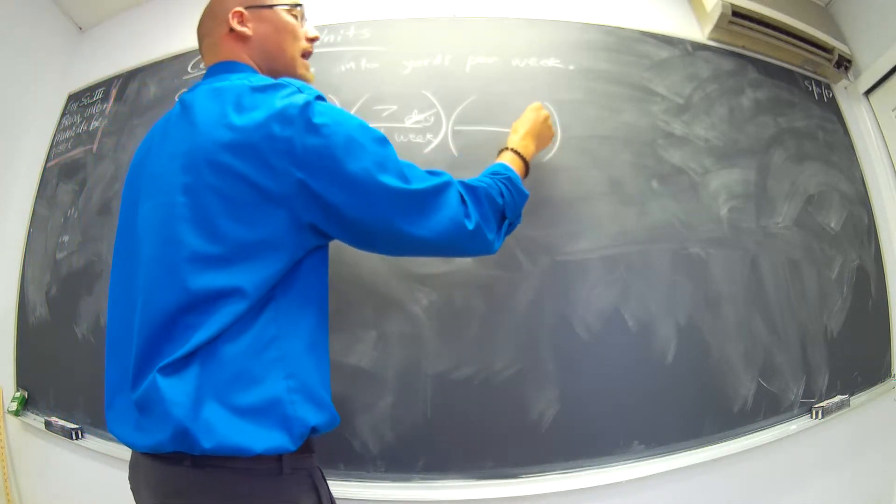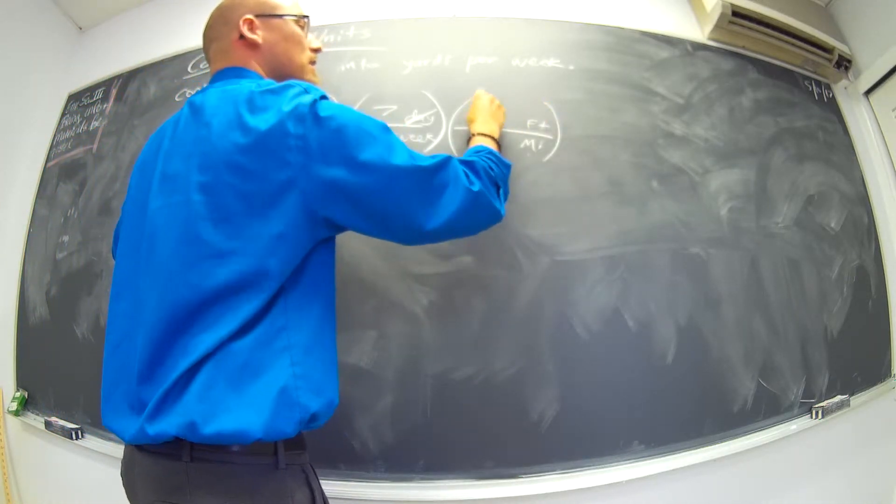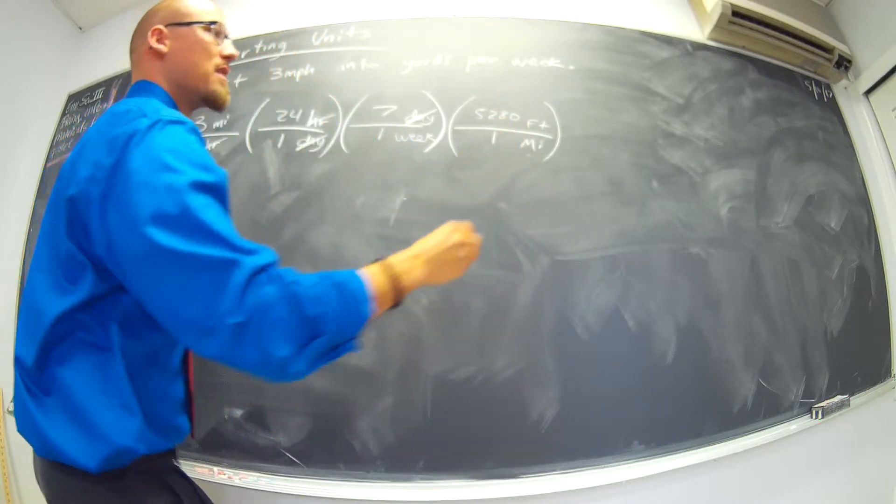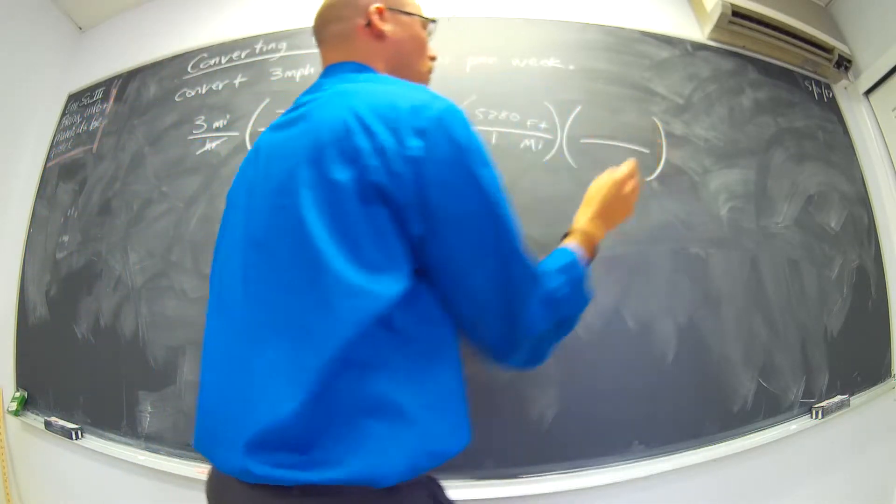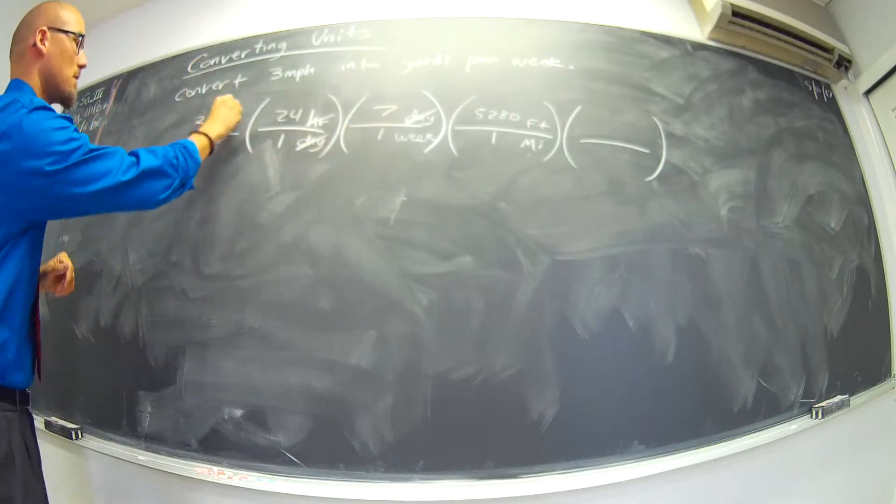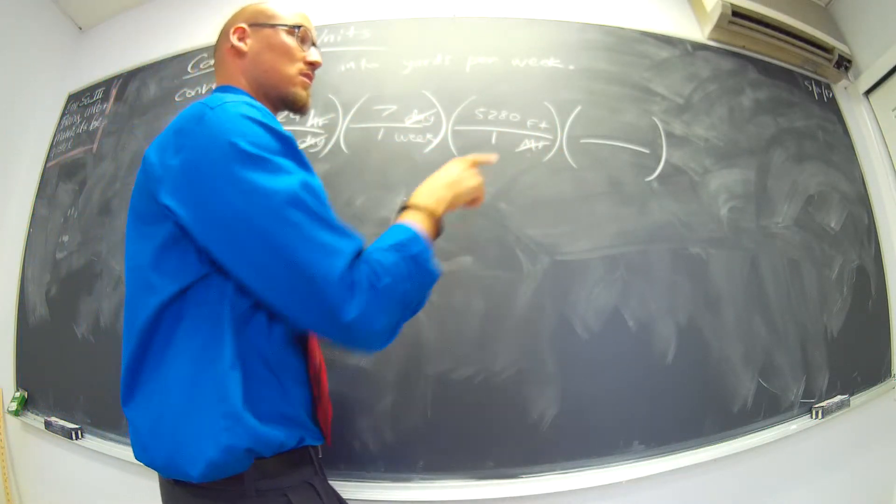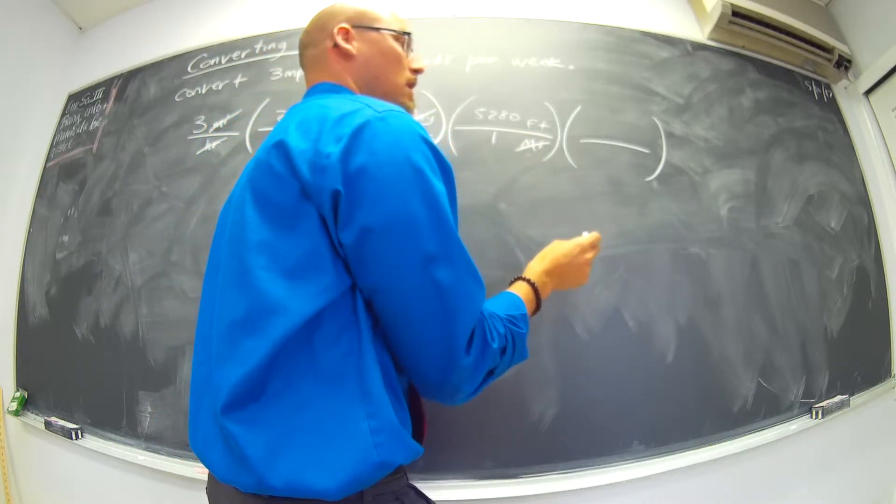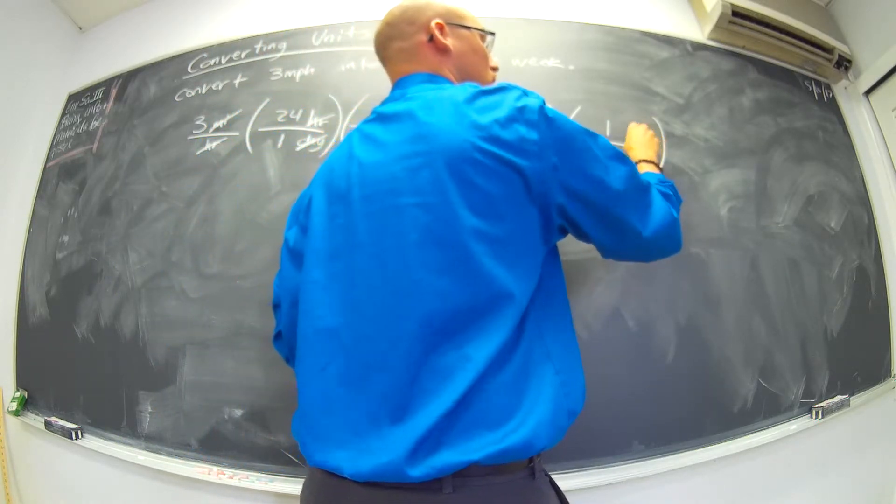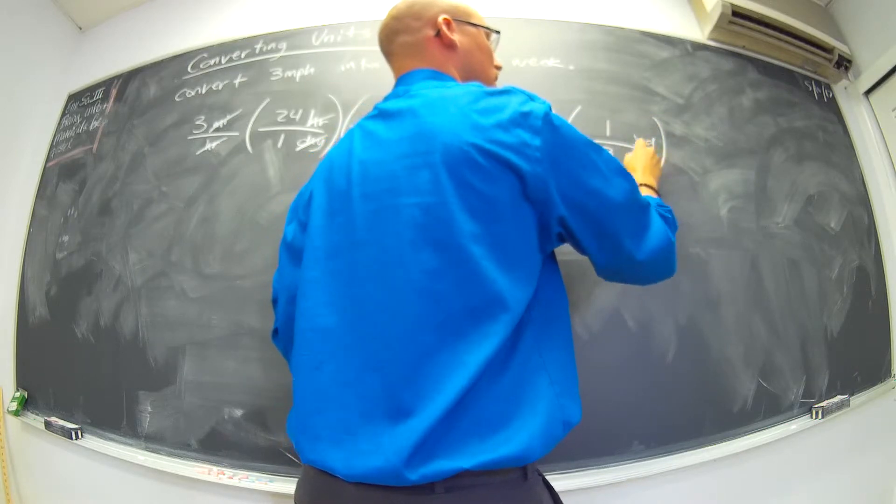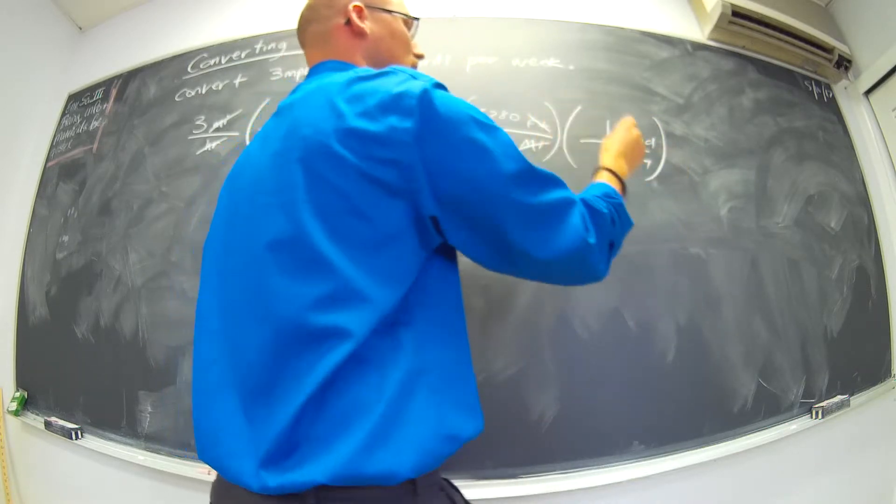So I want miles to cancel. So miles to feet, I know is 5,280. And then how many, well, I want to get, oh, let's see, miles, cancel, cancel. And then we want to go from feet to yards. So how do I set that up? Even one yard. Or one yard over three feet. One yard is three feet. And then so feet, cancel.